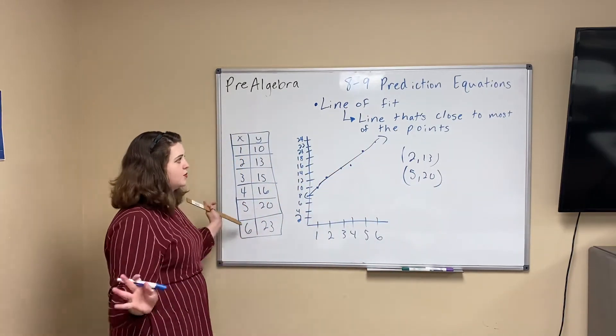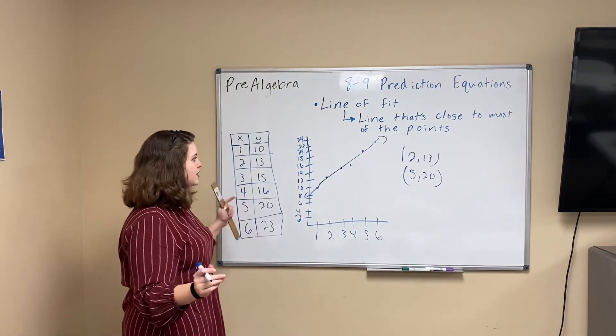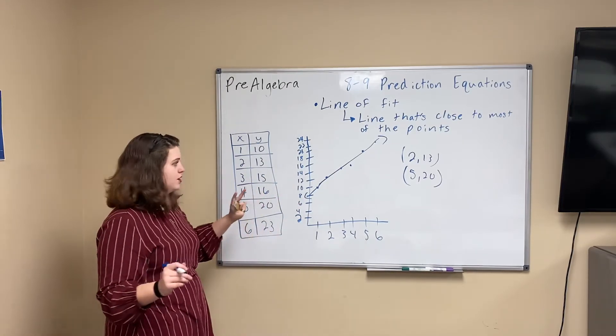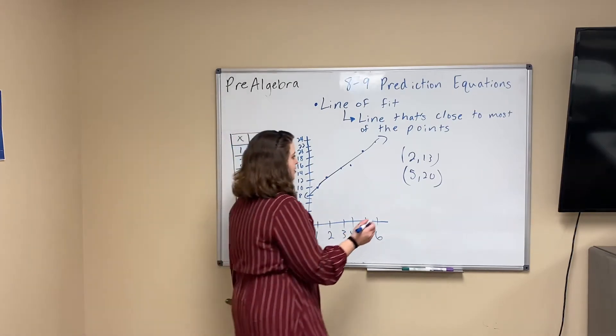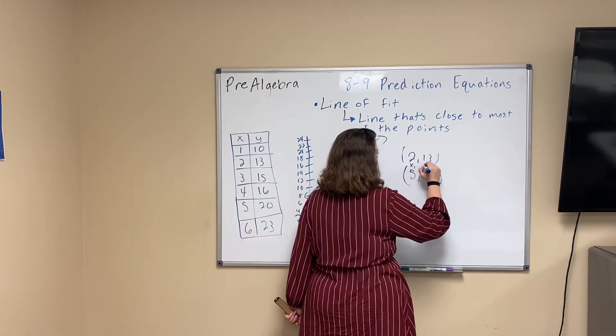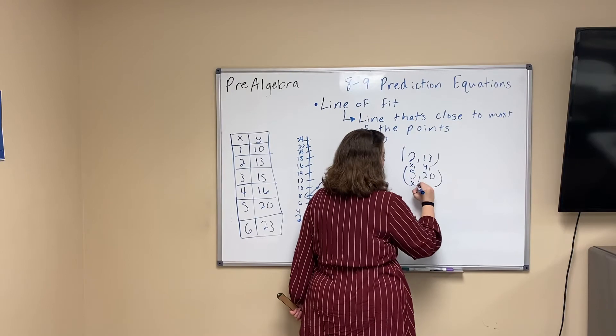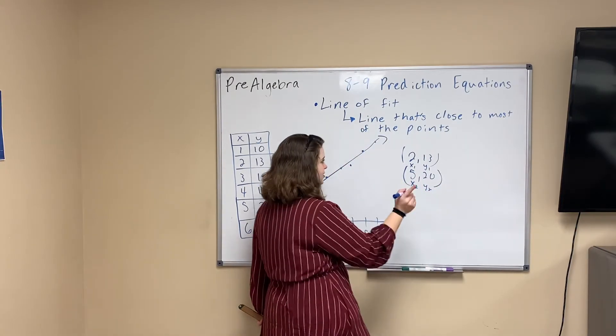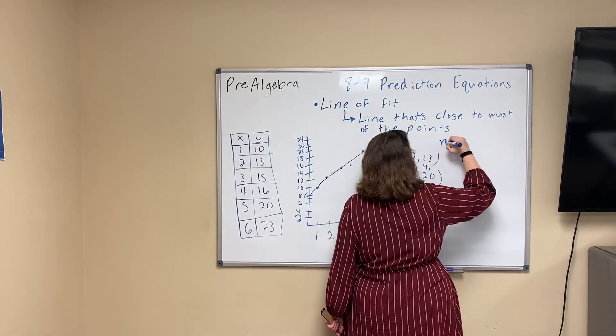So, to find our line of fit now, it's going to be our line that's closest to most of the points. I'm going to use our strategies that we learned in 8-8 to write the equation of the line, but using these two points. So these two points are 2 and 13, and 5 and 20. Now we're going to do what we did in 8-8, finding the equation of the line. We have two points, so that's going to mean we're going to use our point-slope form, right?